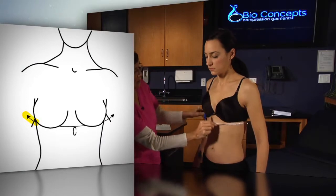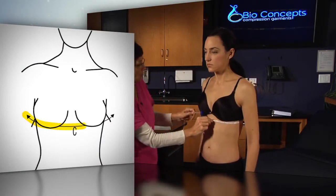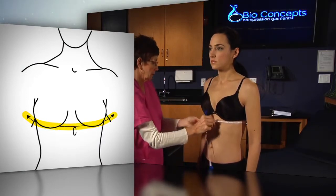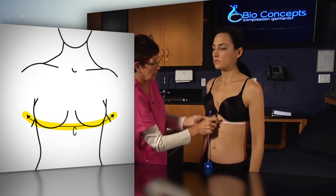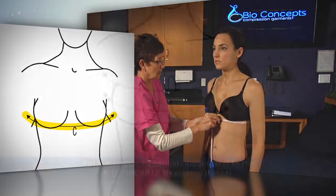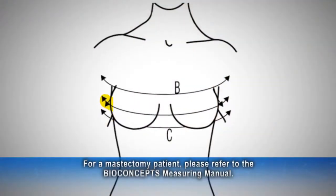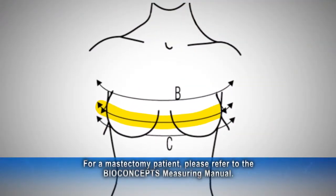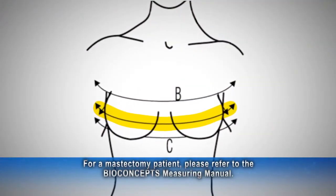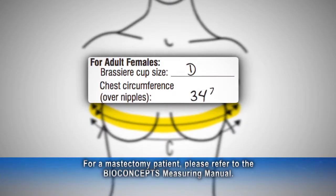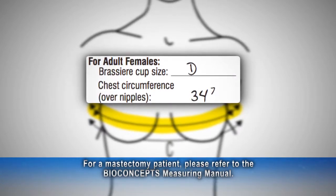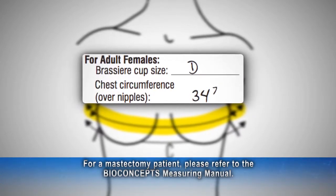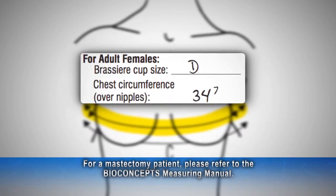For the adult female, the capital C measurement is the torso circumference directly below the breasts. Also take a circumference of the torso over the breasts. Record the circumference and the patient's self-reported bra cup size on the measurement chart.